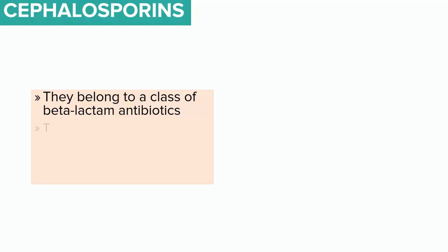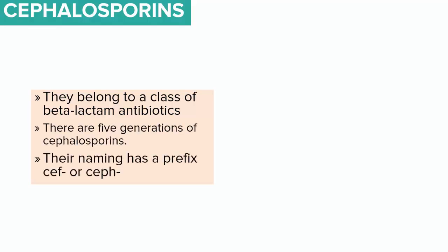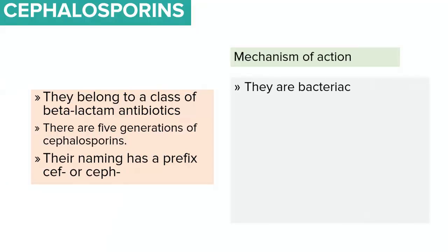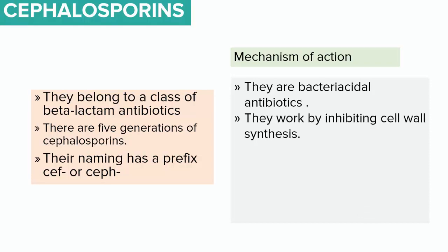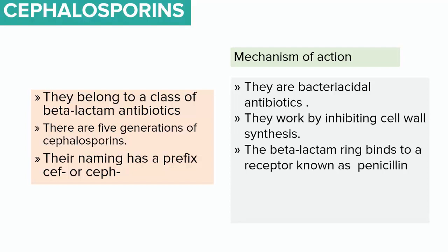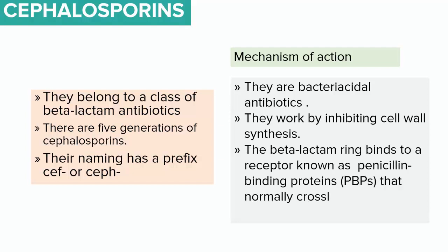Similar to penicillins, there are five generations of cephalosporins and their naming has a prefix 'ceph'. Cephalosporins are known to be bactericidal antibiotics, meaning they kill the bacteria. These antibiotics work by inhibiting cell wall synthesis. The beta-lactam ring binds to a receptor known as penicillin-binding protein.